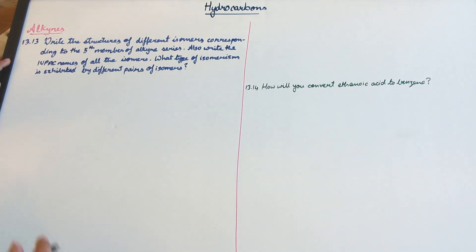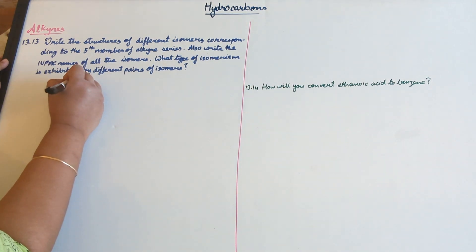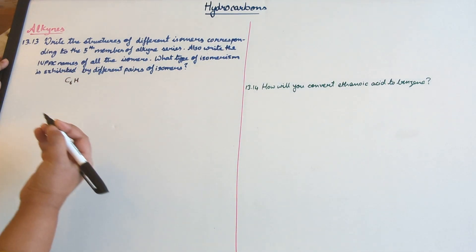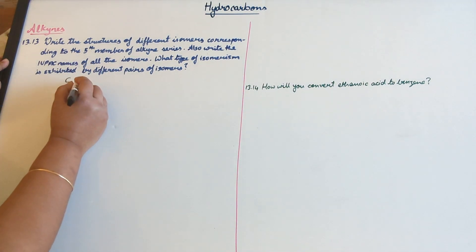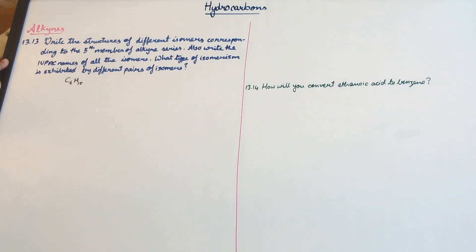So hexyne, the molecular formula is C6H2N-2, 6 times 2 is 12, minus 2 that is 10.